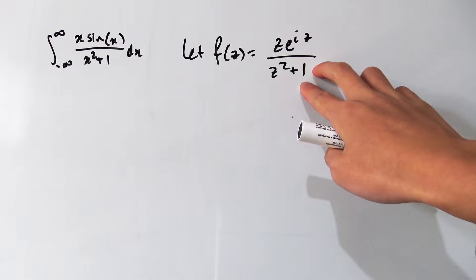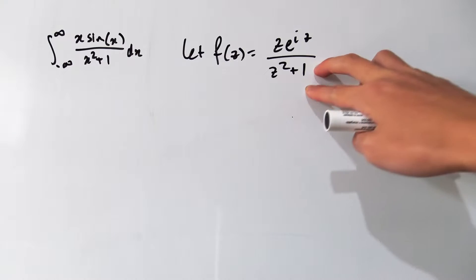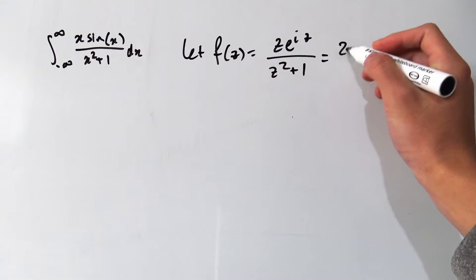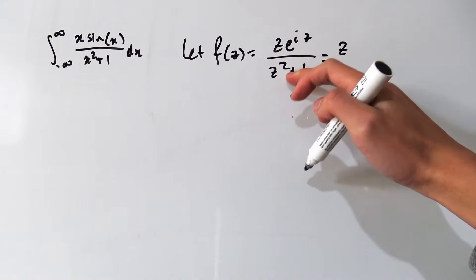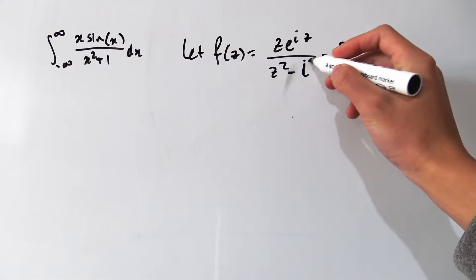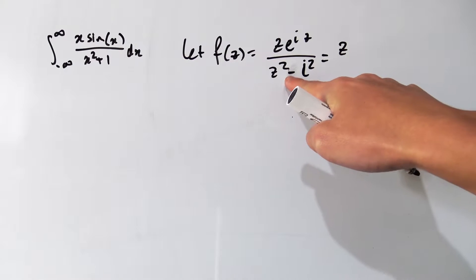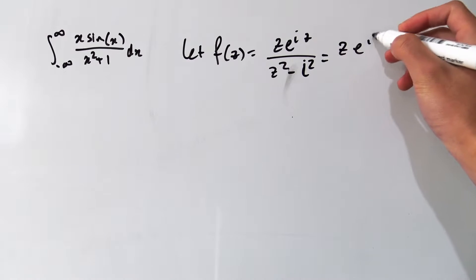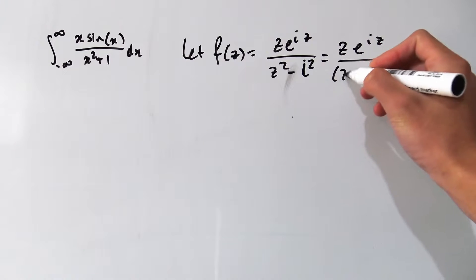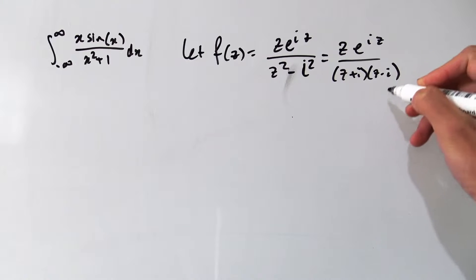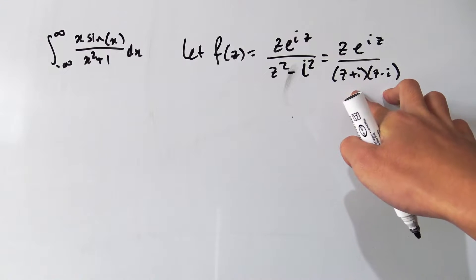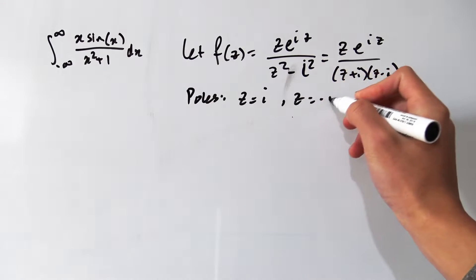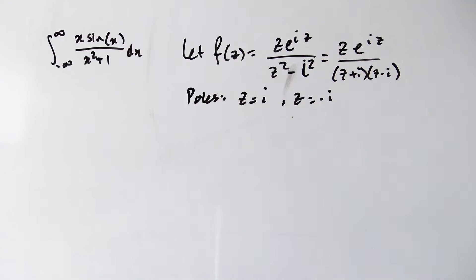In the denominator we're going to have two zeros, which means we have two poles for our function. If you factor the denominator using difference of two squares — since z² + 1 = z² − (i²) — you get (z + i)(z − i), giving us two poles at z = i and z = −i.